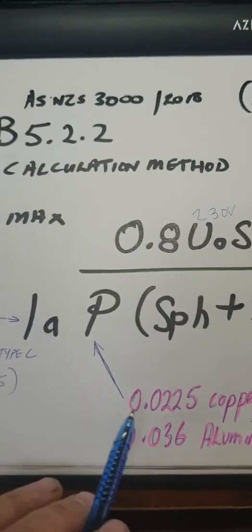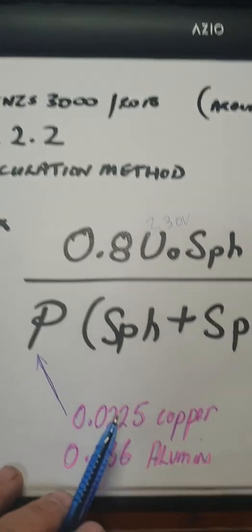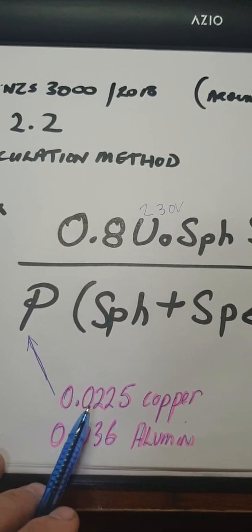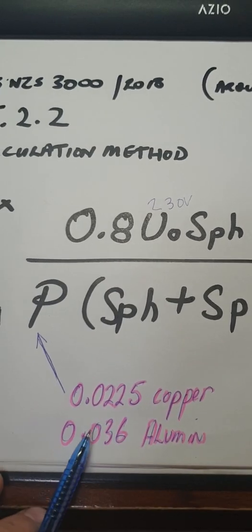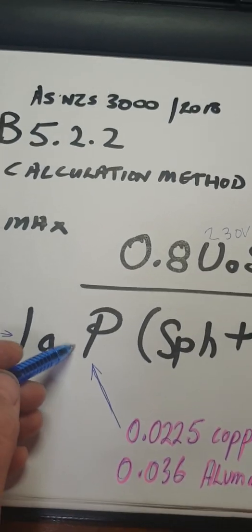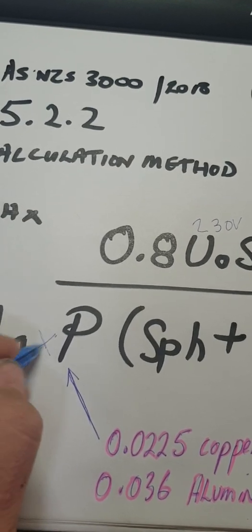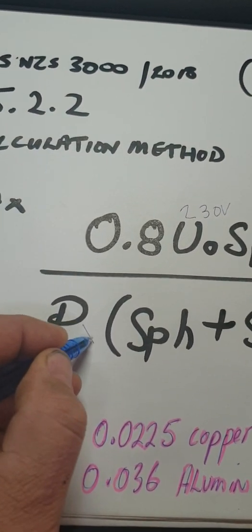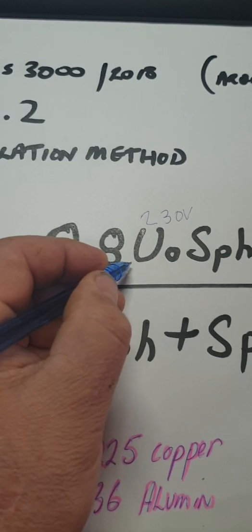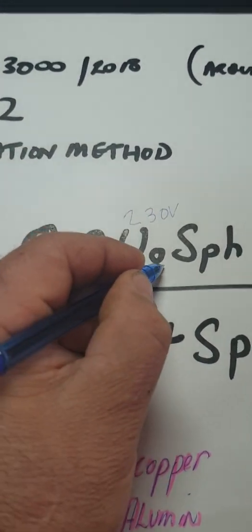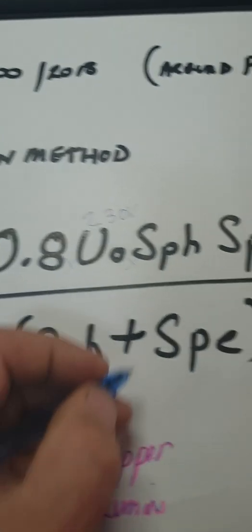For example, if I had a 25 amp circuit breaker times C, it would be 25 times 7.5. Now what's the P stand for? The P stands for if we got copper or aluminium. So 0.225 for copper.